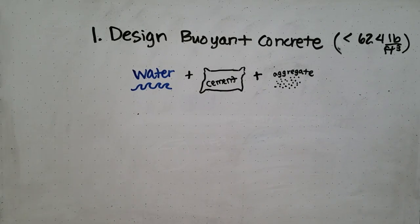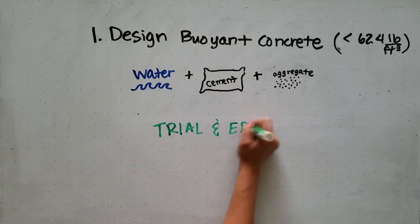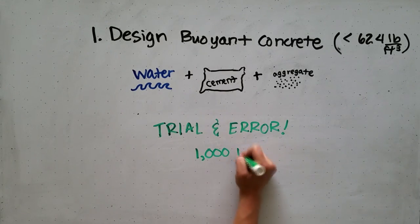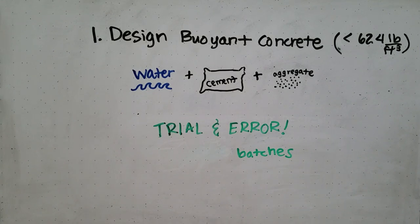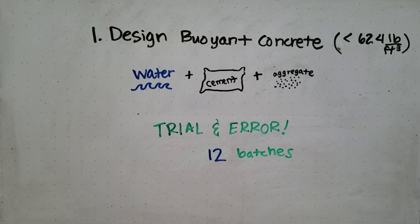The proportions of each component are determined by trial and error. If you have the time, make about a thousand batches to figure out exactly what you need. However, most of us don't have that much time, so just make as many as you can.